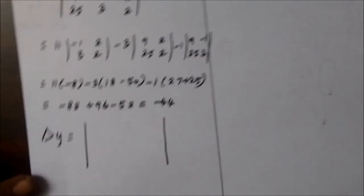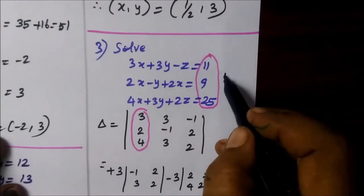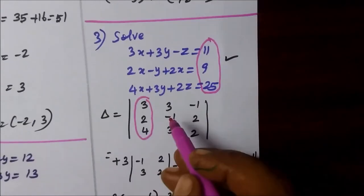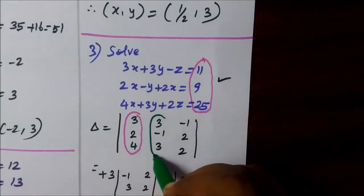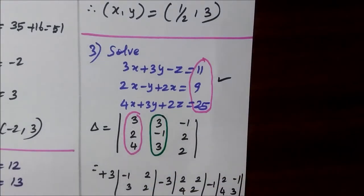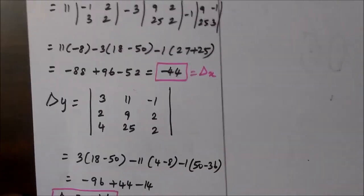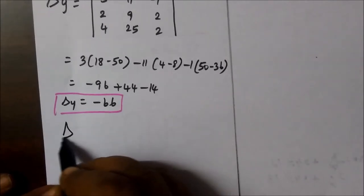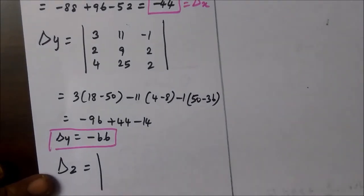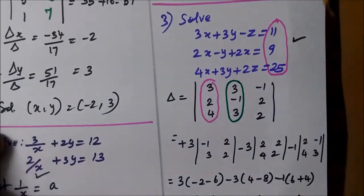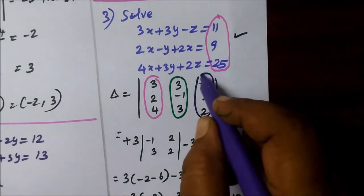So, delta y is equal to 3, 2, 4. Then, second time. Del x and del y are computed. Del z is equal to delta x, first time as usual. The third card is minus 1, minus 2, minus 2. This is the same place.